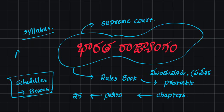Articles are the same — parts are the same, chapters are the same. Paras 1, Paras 2 — I will write points, I will write articles. Just compare your constitution — the constitution is the same structure throughout. You can compare and compare.